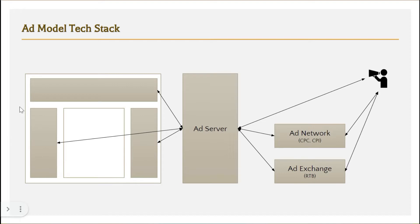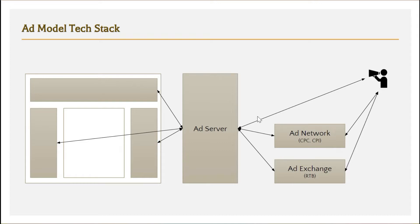Now let's see how the website owner charges the marketer. In a direct contact arrangement, it generally happens through a lease mechanism — for example, running an ad for a particular month in a particular slot. It will be a fixed kind of price for the marketer or advertiser to run his ad on that particular slot. That is for the direct contact which the website owner has with the advertiser.